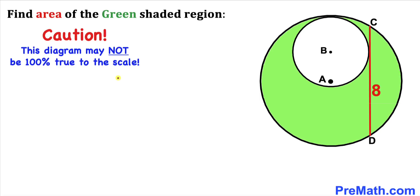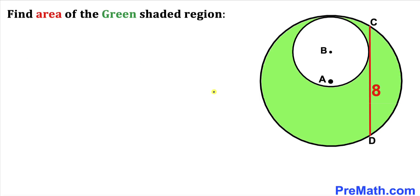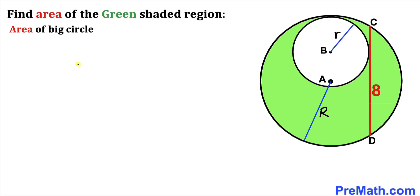Note that this figure may not be 100% true to scale. Let's get started with the solution. First, let's focus on the radii of these circles. The radius of the smaller circle will be represented by lowercase r, and the radius of the larger circle will be labeled uppercase R. Now let's recall the area of a circle formula: area equals pi r squared.